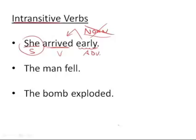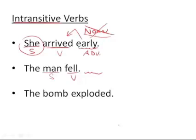Now let's move on to the next one: the man fell. Man is the subject, fell is the verb. As I said a moment ago, that's all we need for a sentence — a subject and a verb, if that verb is intransitive. Because we don't need anything else. An intransitive verb doesn't do anything to anything. It simply stands on its own.